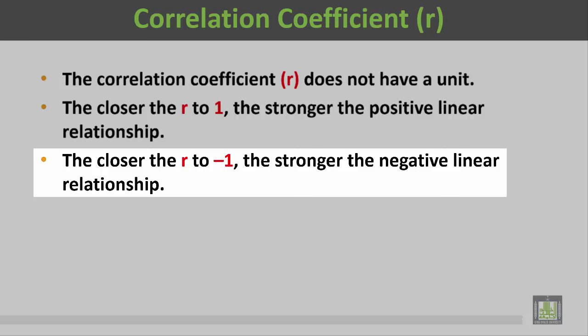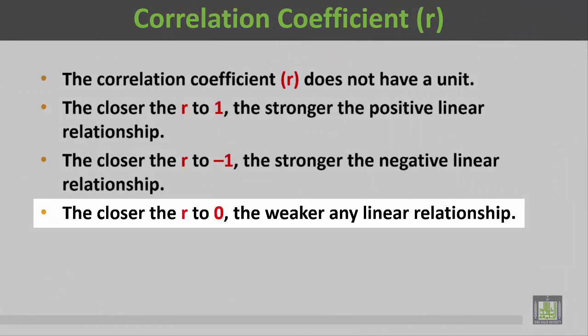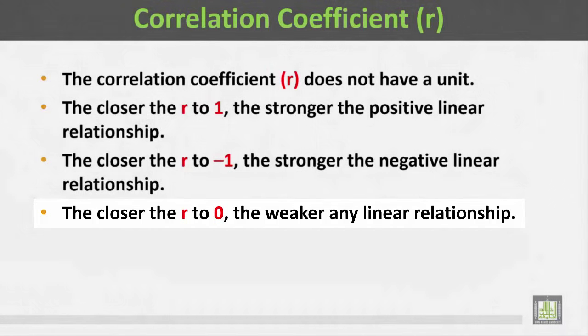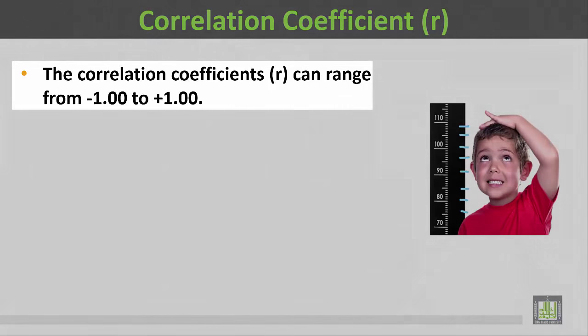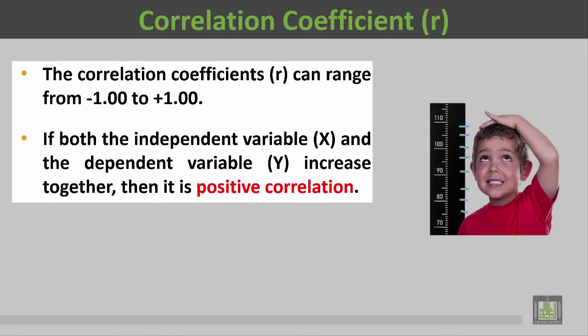The closer R is to minus 1, the stronger the negative linear relationship — meaning a strong inverse linear relationship. The closer R is to zero, the weaker the linear relationship. The correlation coefficient R can range from minus 1 to plus 1.